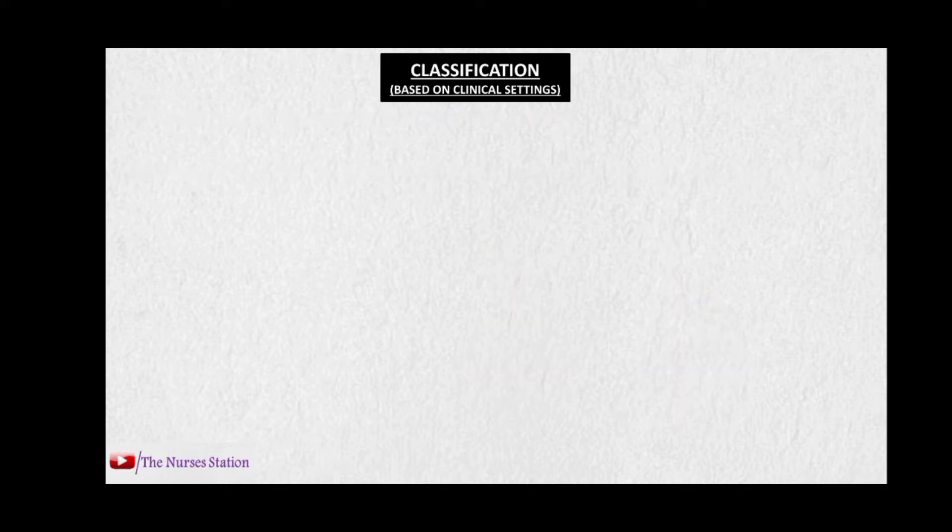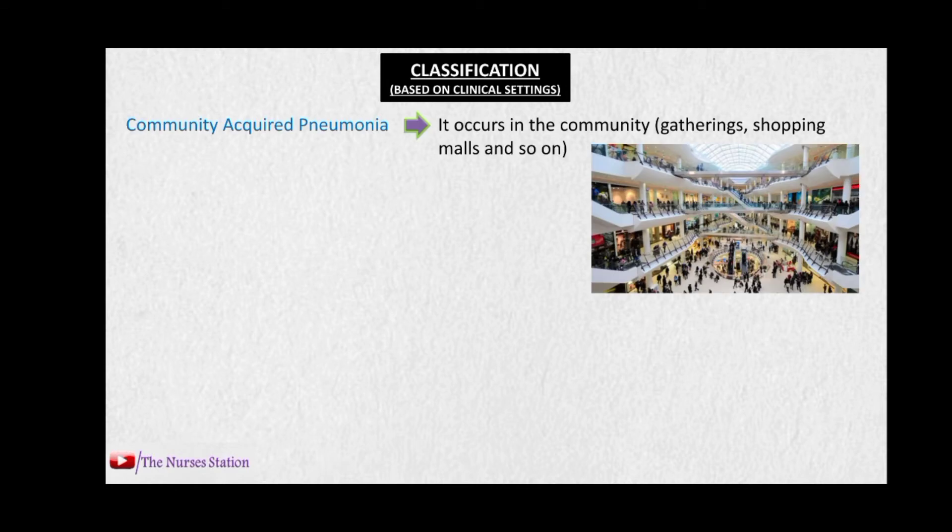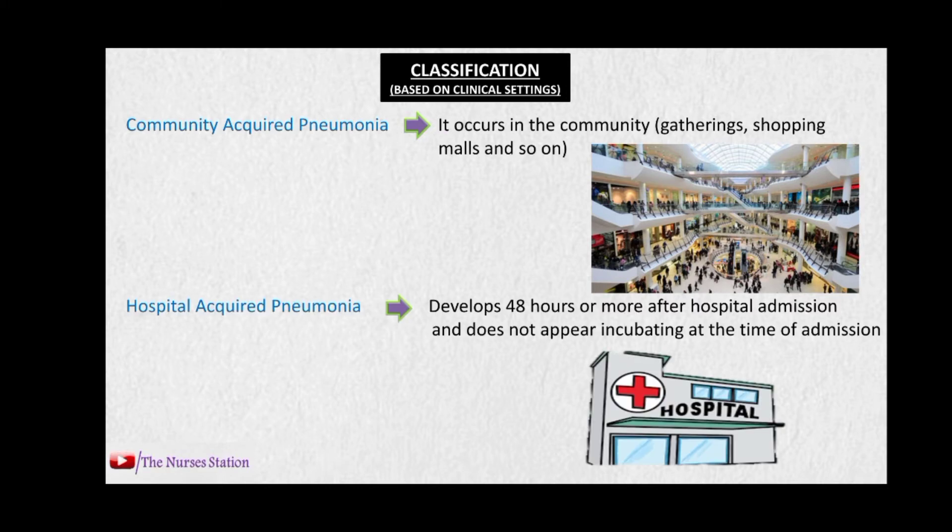The classification of pneumonia is based on the clinical setting in which it occurs. The first is community-acquired pneumonia, which occurs in patients in settings involving public gatherings like shopping malls and wedding ceremonies.